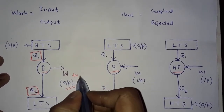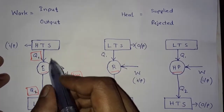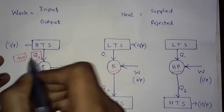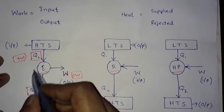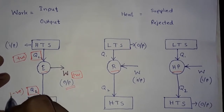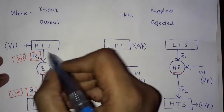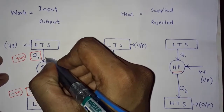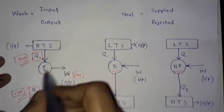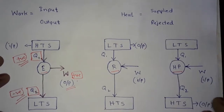Work done from the system is a positive quantity. Whenever we supply any amount of heat energy to a system, it is a positive quantity. When the system rejects heat energy, it is a negative quantity. So: heat supplied to the system is positive, heat rejected from the system is negative, and work done from the system is positive.